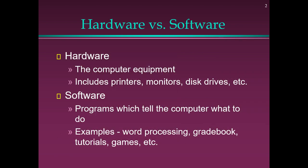Hardware vs. Software: Hardware refers to the computer equipment, including printer, monitor, disk drives, etc. Software refers to programs which tell the computer what to do — examples include Word Processing, Gradebook, Tutorials, Games, etc.